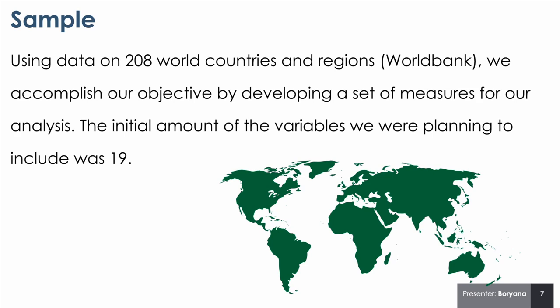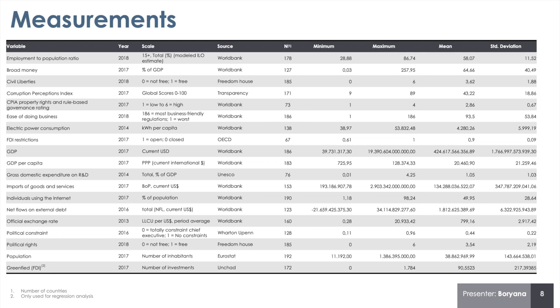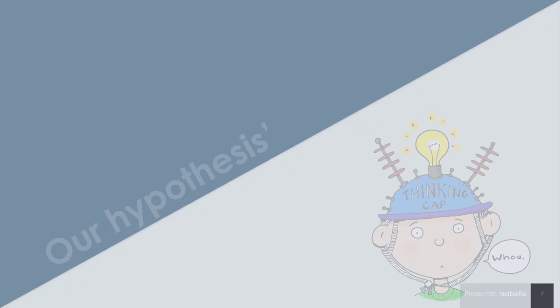Our objective is to investigate foreign market entry using factor and regression analysis for world countries and regions. Our sample included 208 world countries and regions and our initial amount of variables was 19. The measurements we chose were based on data from World Bank, Freedom House, Transparency, OECD, UNESCO, Wharton-OPEN, Eurostat, and UNCTAD. Our dataset included 19 different variables.